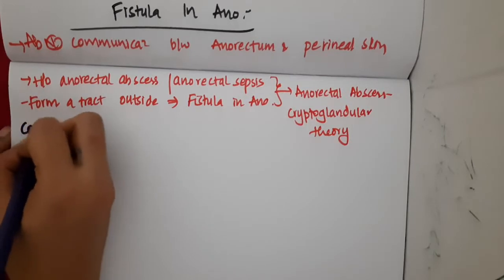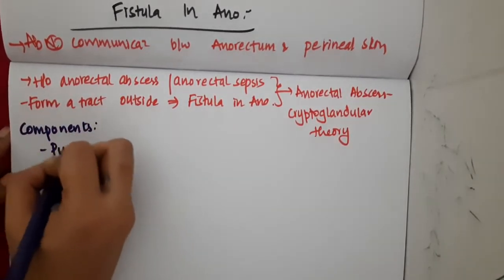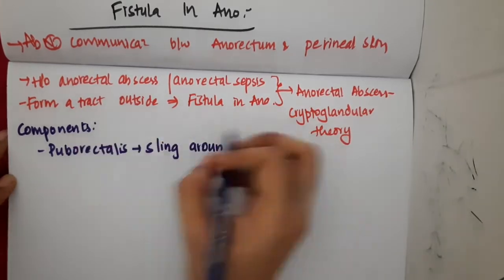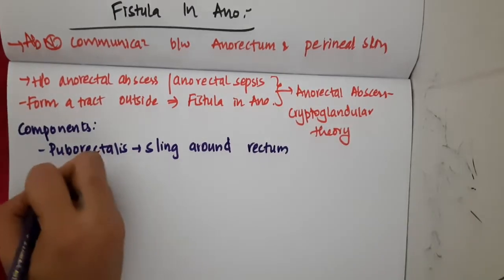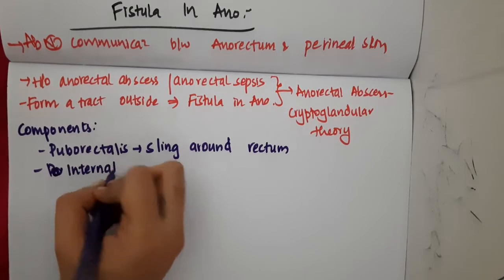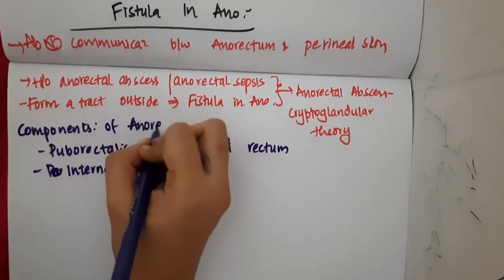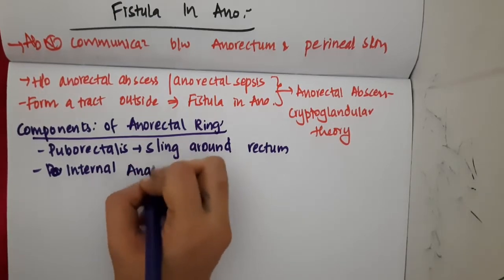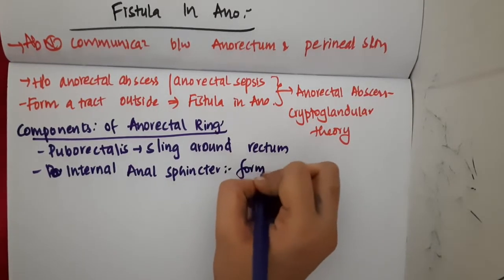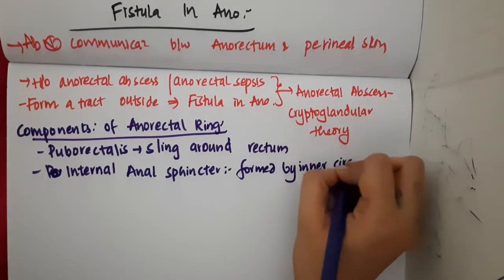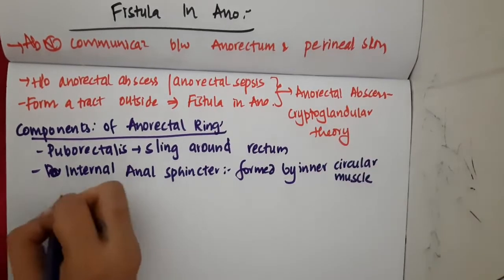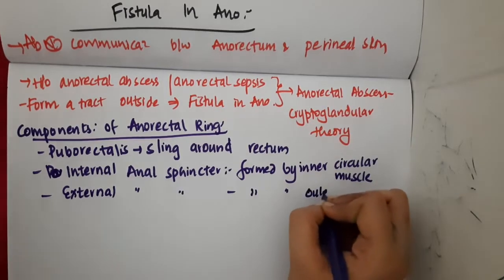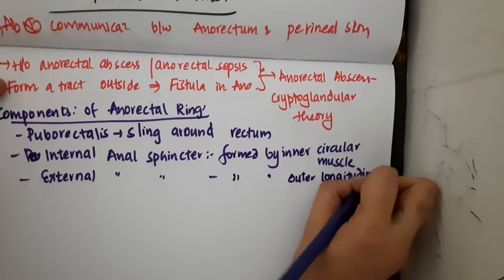The components of the anorectal ring are: first, we have the puborectalis, which is present like a sling around the anorectum. We also have the internal anal sphincter, which is mainly formed by the inner circular muscles. And the anorectal ring also consists of the external anal sphincter, which is formed by the outer longitudinal muscles.